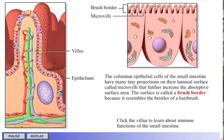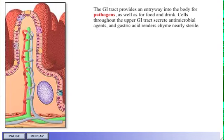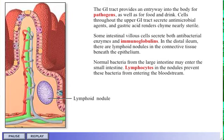The GI tract provides an entryway into the body for pathogens, as well as for food and drink. Cells throughout the upper GI tract secrete antimicrobial agents, and gastric acid renders chyme nearly sterile. Some intestinal villus cells secrete both antibacterial enzymes and immunoglobulins. In the distal ileum, there are lymphoid nodules in the connective tissue beneath the epithelium. Lymphocytes in the nodules prevent bacteria from the large intestine from entering the bloodstream.